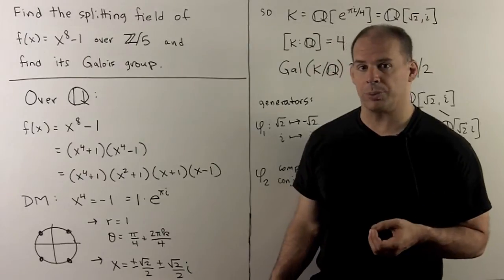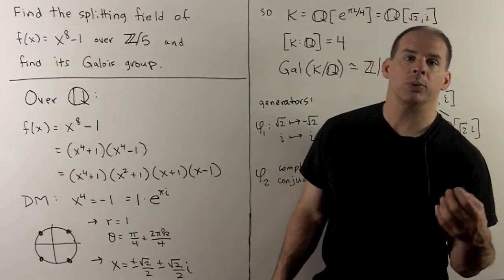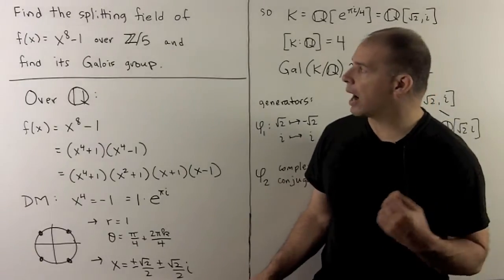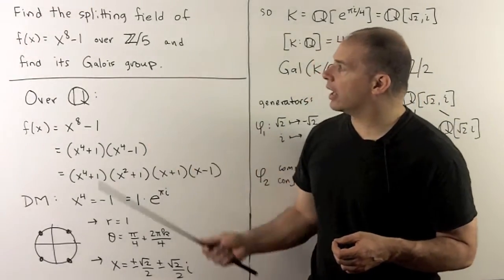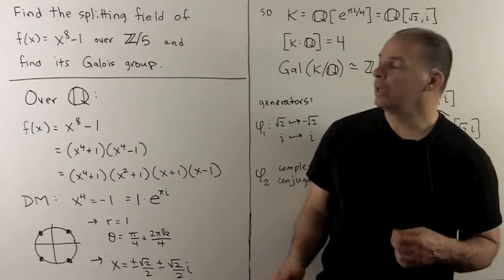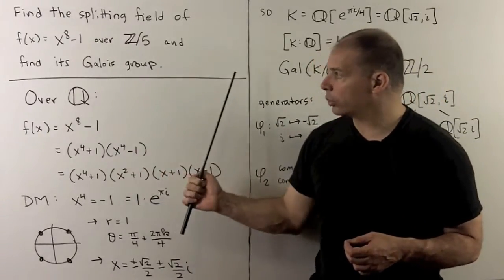Here's another example of the Galois correspondence. Here, we consider what happens when we work over a finite field. Problem: find the splitting field of f(x) = x^8 - 1 over Z mod 5, and we want to find its Galois group.